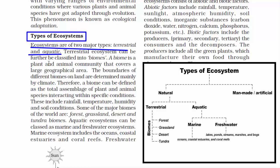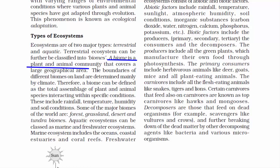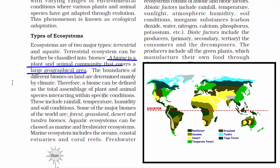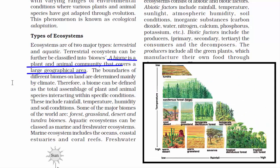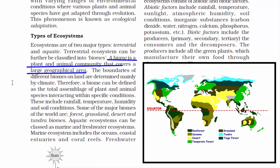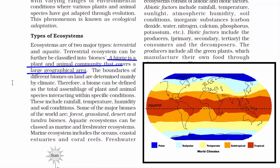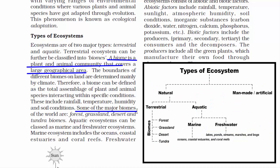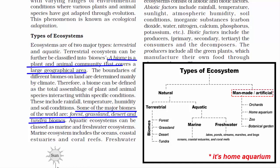A biome is a large terrestrial ecosystem characterized by a particular type of natural vegetation and animal life. As we go away from the equator towards the polar region, the temperature drops, and this has an immediate impact on flora and fauna. Ecosystems are divided based on different physical conditions like rainfall, temperature, humidity and soil conditions. Some of the major biomes of the world are forest, grassland, desert and tundra biomes.